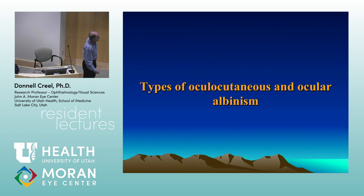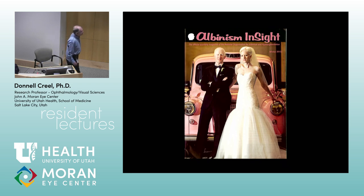There are different types of ocular cutaneous and ocular albinism — you only need the ocular component to be affected. There is a support organization called NOAH — National Organization for Albinism and Hypopigmentation — which has a quarterly magazine. This is one cover showing a married couple who met through the organization as teenagers while living in different parts of the country. If they're not the same gene, their children will be as pigmented as us, because there are many different genes and loci.